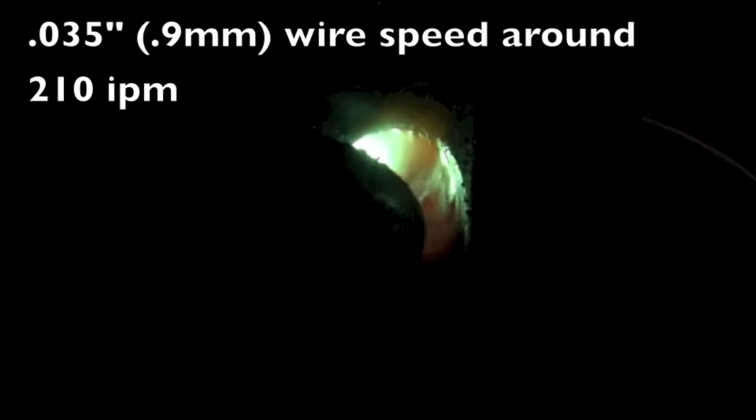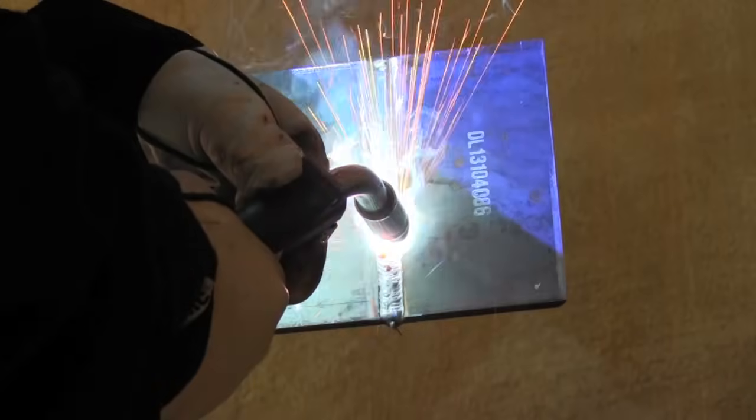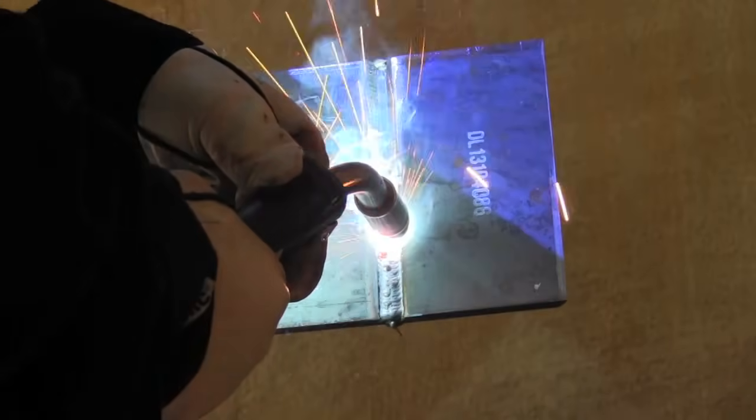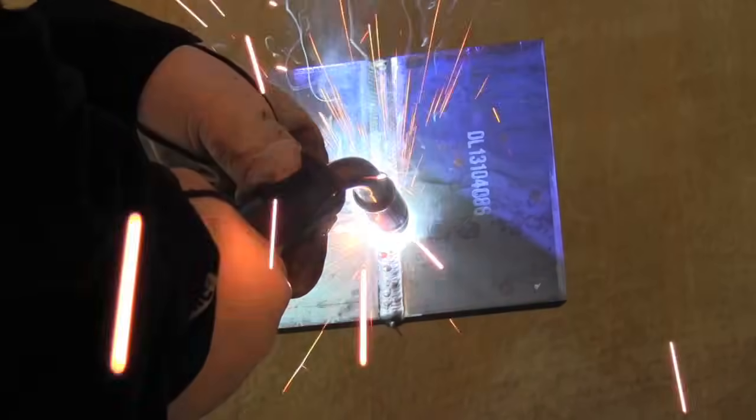But watch the leading edge of the puddle here. I'm keeping the arc on the leading edge of the puddle and you see a little spatter going on there. That means I need to turn the wire feed speed up just a little bit. And so I did. I turned the wire feed speed up about maybe about 10%.